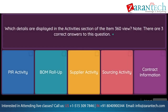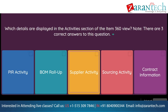Question: Which details are displayed in the activities section of the item 360 view? Note, there are three correct answers to this question. Option 1: PIR activity. Option 2: BOM roll-up. Option 3: supplier activity. Option 4: sourcing activity. Option 5: contract information.